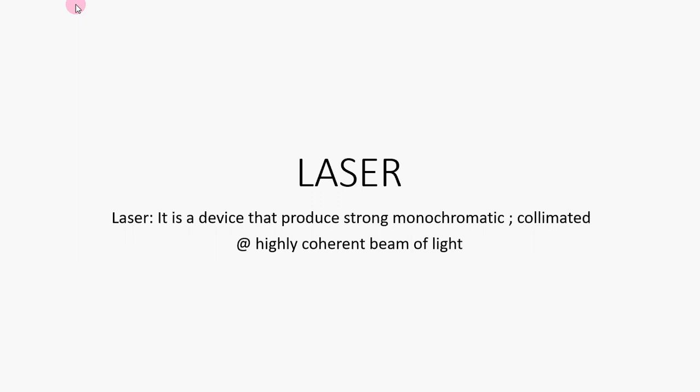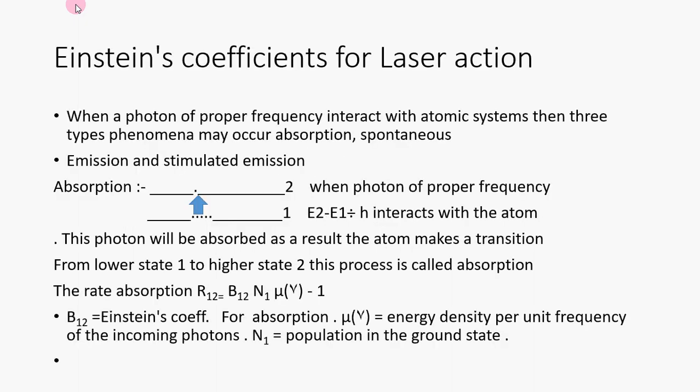So we calculate the Einstein coefficients for laser action. What phenomena will happen when a photon of proper frequency interacts with an atomic system in the ground state? Three types of phenomena may occur: absorption, spontaneous emission, and stimulated emission. First, absorption: when a photon of proper frequency E2 minus E1 upon h interacts with the atom in the ground state, this photon will be absorbed by this atom. As a result, the atom may make a transition from lower energy state to higher state.